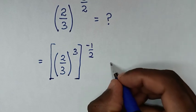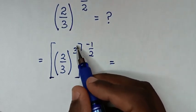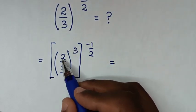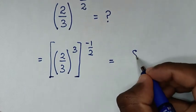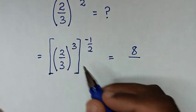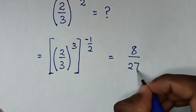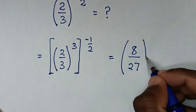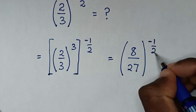Then it will be equal to — in here I will take this power of 3 inside the bracket — so it will be 2 power of 3, which is 8, then over 3 power of 3, which is 27, then bracket power of negative 1 half.